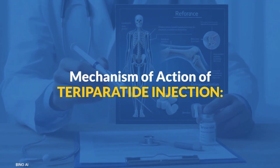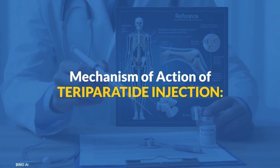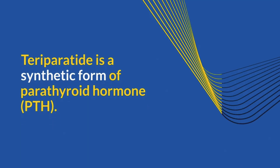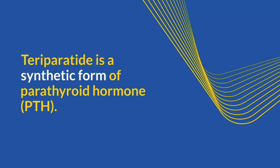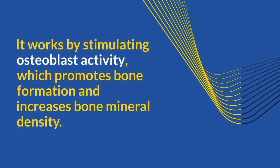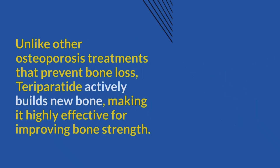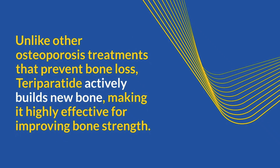Next, the mechanism of action of teriparatide injection. Teriparatide is a synthetic form of parathyroid hormone. It works by stimulating osteoblast activity, which promotes bone formation and increases bone mineral density. Unlike other osteoporosis treatments that prevent bone loss, teriparatide actively builds new bone, making it highly effective for improving bone strength.